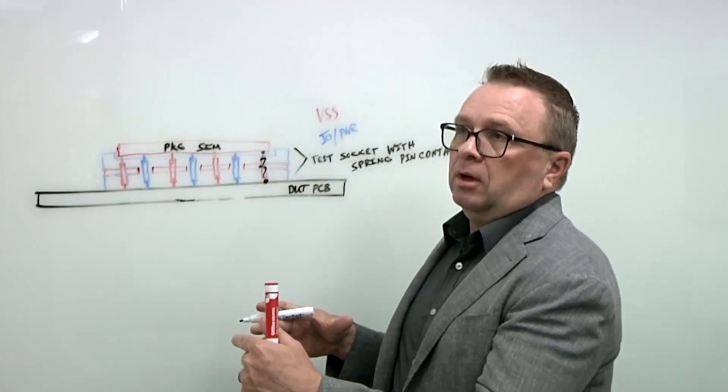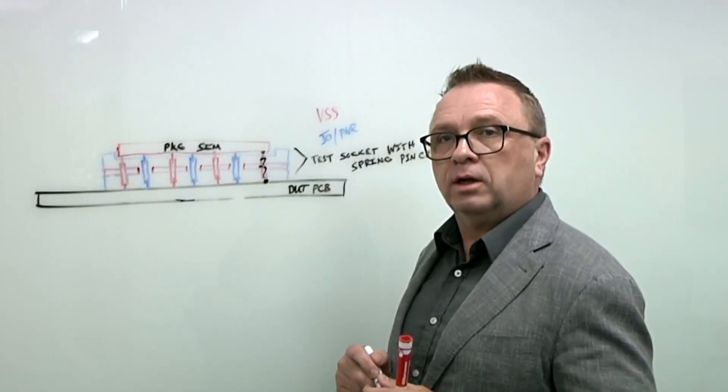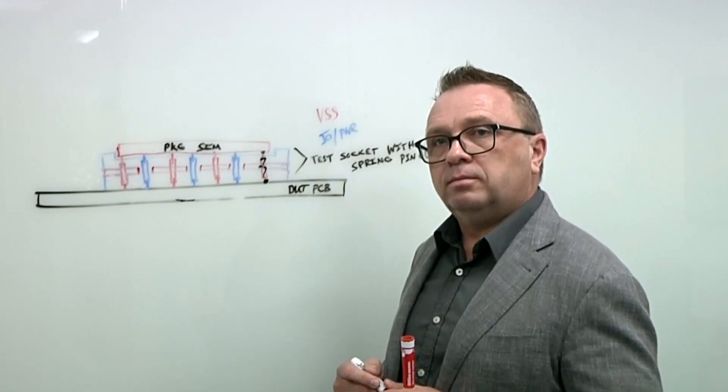So these devices are 150 millimeter square with over 22,000 contact points and the roadmap is up to 80,000 right now. Wow.